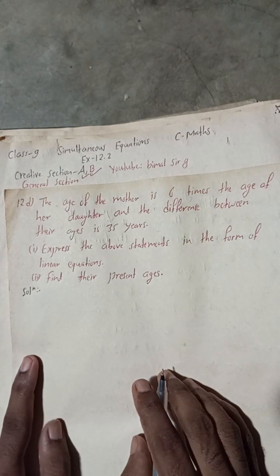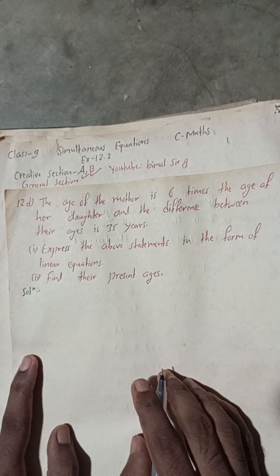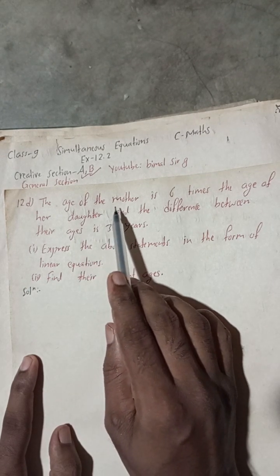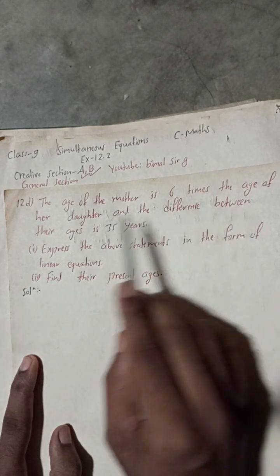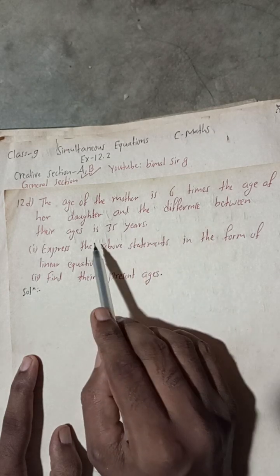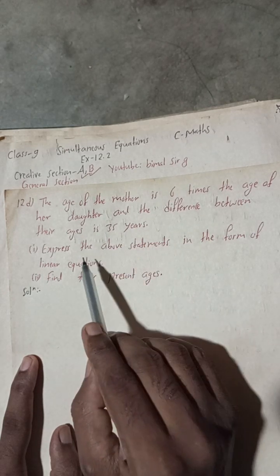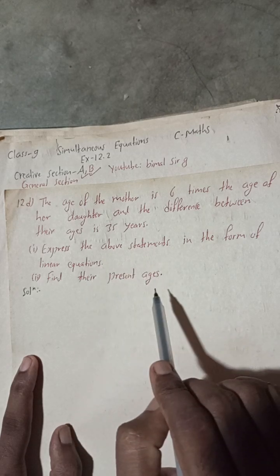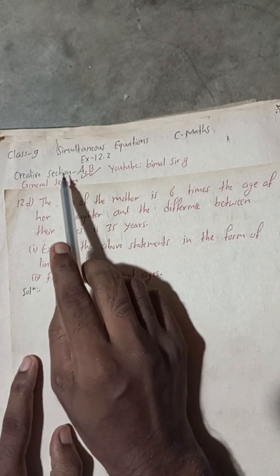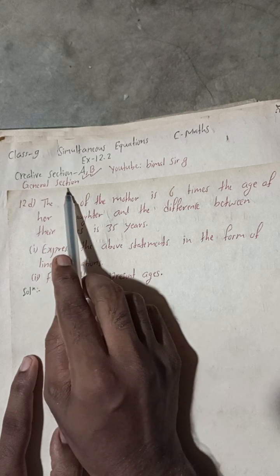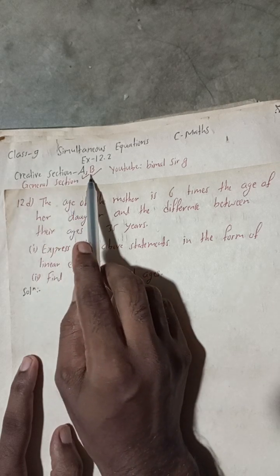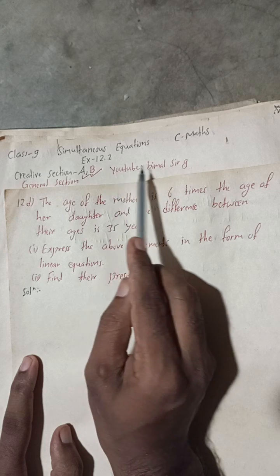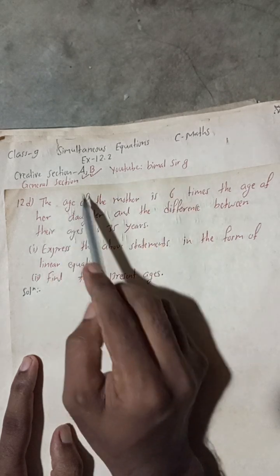Hi everybody, welcome back to Bimal Sarji's YouTube channel. This is question number D. The age of the mother is six times the age of her daughter and the difference between their ages is 35 years. Express the above statements in the form of linear equations and find their present ages. General section and creative section A and B are already uploaded in my YouTube channel — you can check the playlist.